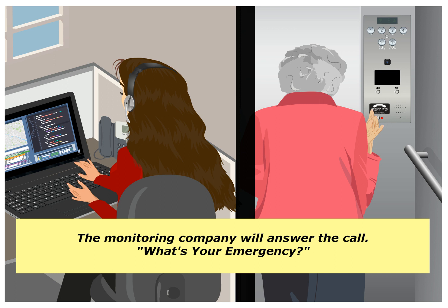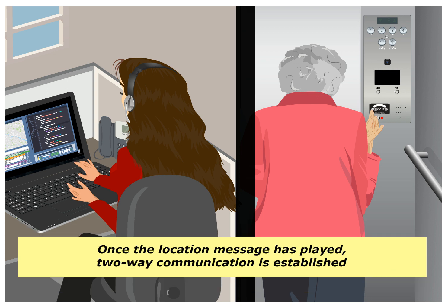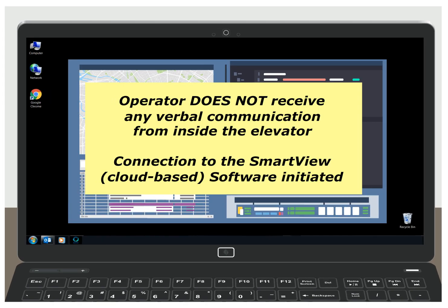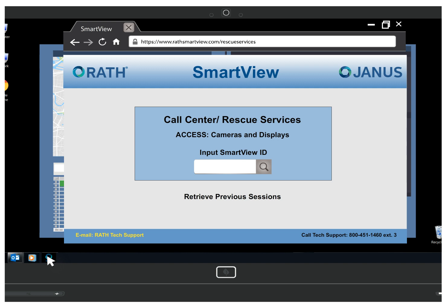The monitoring company answers the call: "What's your emergency?" The pre-recorded location message, which includes a unique ID number, plays twice for both parties: "Highland Hotel, Building A, Elevator 3, SmartView ID 12345." Once the location message has played, two-way communication is established and the call progress LED will flash. Since the monitoring company does not receive any verbal communication from inside the elevator, they will open a link on their computer to the SmartView cloud-based software.